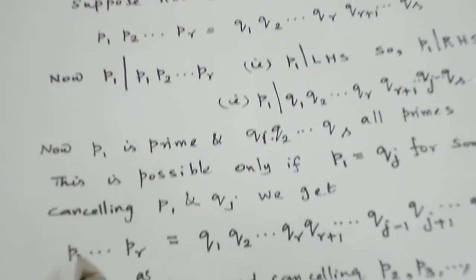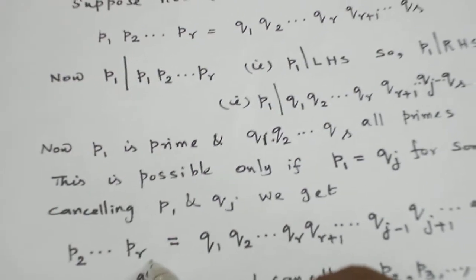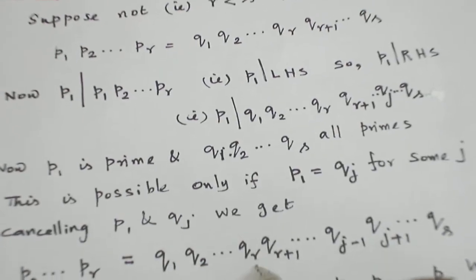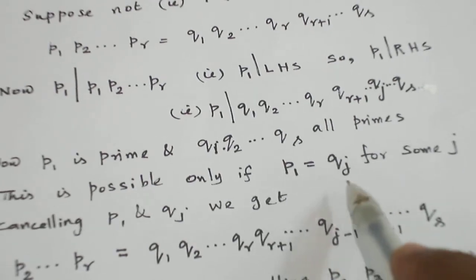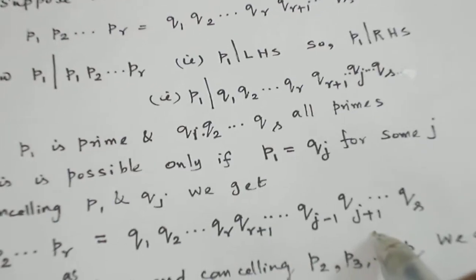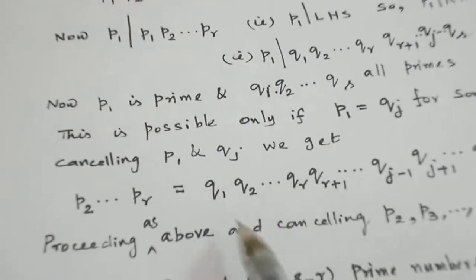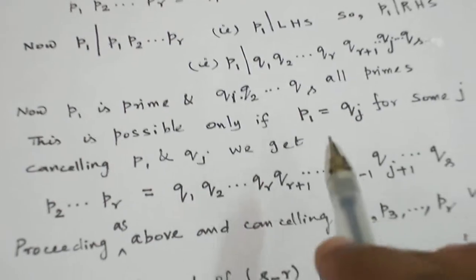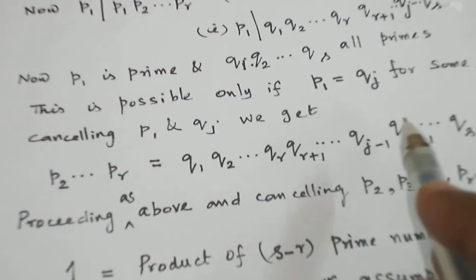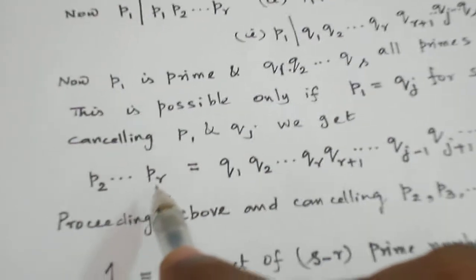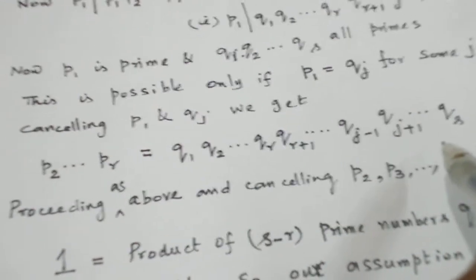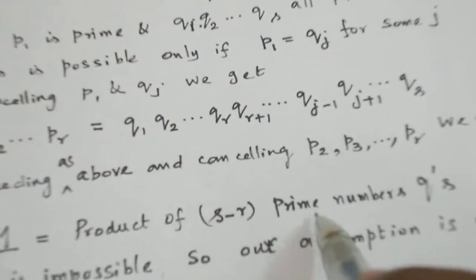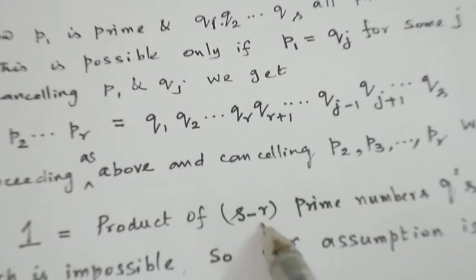When we cancel p1 and qj, the left-hand side becomes p2 · p3 · ... · pr, and the right-hand side has q1 · q2 · ... · qr · qr+1 · ... · qj-1 · qj+1 · ... · qs (with qj already cancelled). Proceeding in the same manner, p2 divides the left-hand side, so p2 divides the right-hand side and cancels with some prime qi. When we cancel one by one, the left-hand side is completely cancelled since it has fewer prime numbers than the right-hand side. So the left-hand side first becomes 1, while the right-hand side still has a product of s − r prime numbers.